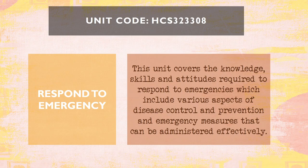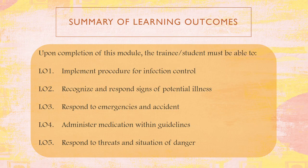Let's move on to the second competency in Part 2: respond to emergencies. This unit covers the knowledge, skills, and attitudes required to respond to emergencies, including various aspects of disease control and prevention and emergency measures that can be administered effectively. Upon completion of this module, the student must be able to implement procedures for infection control, recognize and respond to signs of potential illness, respond to emergencies and accidents, administer medication within guidelines, and respond to threats and situations of danger.